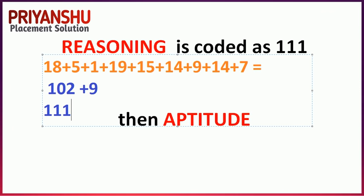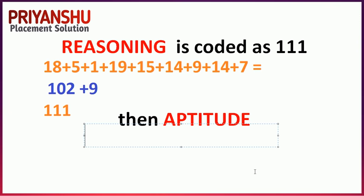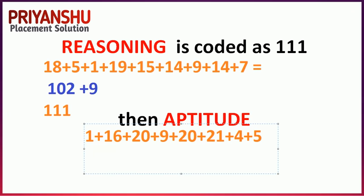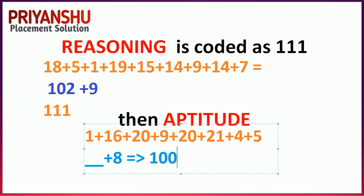Using the same logic for APTITUDE: A=1, P=16, T=20, I=9, T=20, U=21, D=4, E=5. Add all values and then add the count of letters, which is 8. You will get 104 as your correct answer.